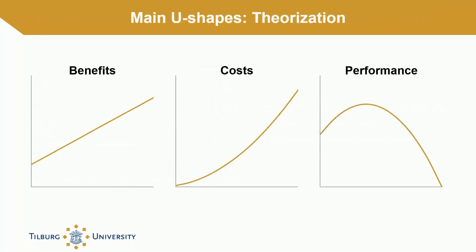To strengthen theoretical reasoning underlying U-shapes, we recommend that researchers build upon latent mechanisms that jointly drive the theorized U-shape. One common example in strategy research is the combination of a linear benefits relationship and a rapidly increasing cost curve. When this cost curve is subtracted from the benefits line, an inverted U-shaped relationship arises as the cost curve eventually overtakes the benefits line.